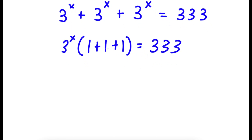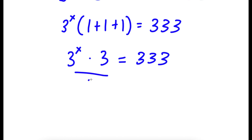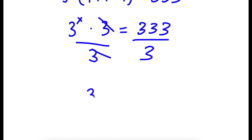Now 1 plus 1 plus 1, that's simply equal to 3. So now I have 3 to the power of x times 3 is equal to 333. From here, I'm going to go ahead and divide both sides by 3. So these two cancel out, and now I have 3 to the power of x is equal to 333 divided by 3, which is 111.